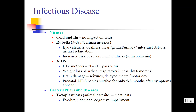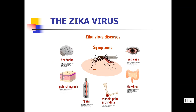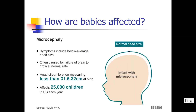Toxoplasmosis is another concern — pregnant women are advised to stay away from kitty litter because it can lead to very severe outcomes for their baby. The Zika virus, which we heard about a few years ago, led to microcephaly in infants — babies being born with heads significantly smaller compared to typically developing children. This condition affects 25 children in the U.S. every year normally, but during the Zika outbreak the numbers were so large it became a national emergency, prompting travel barriers.